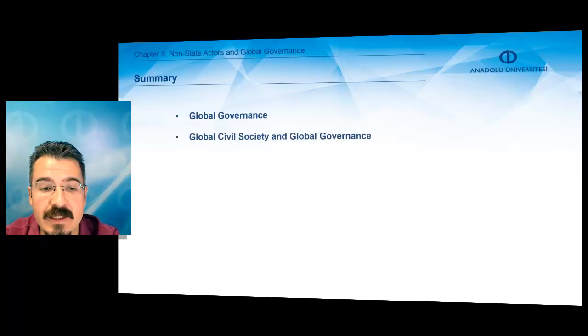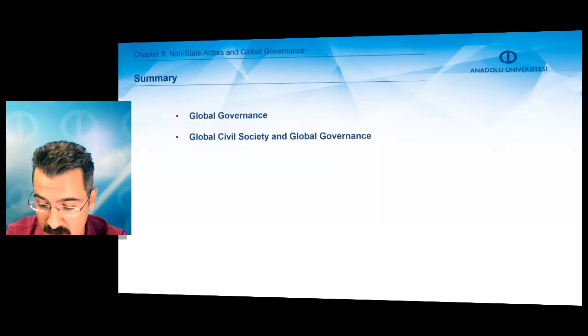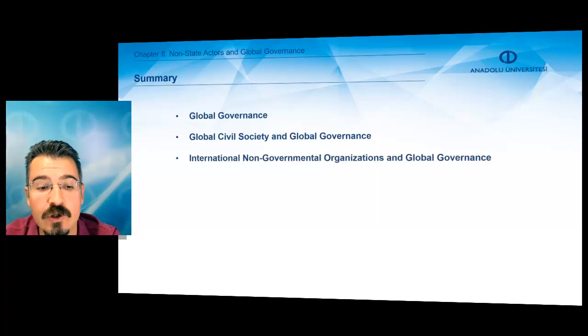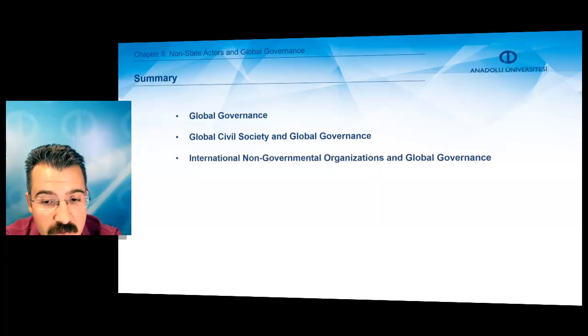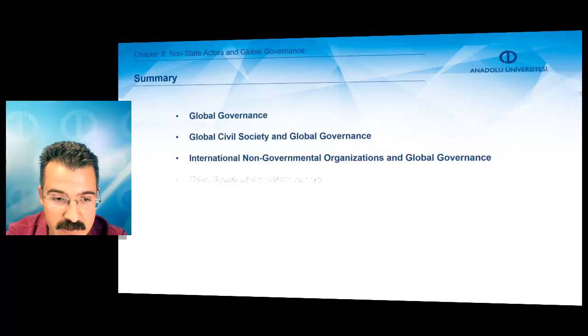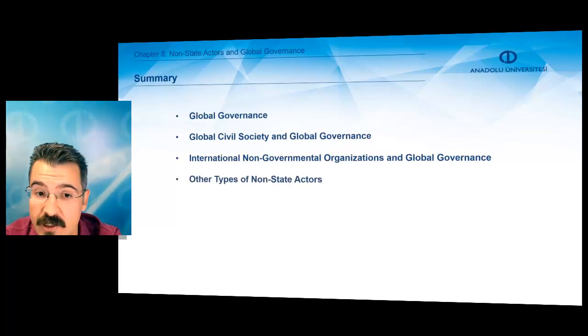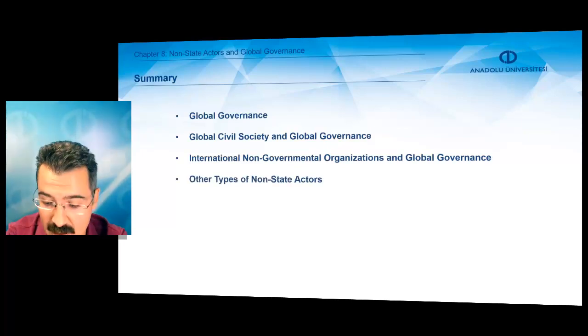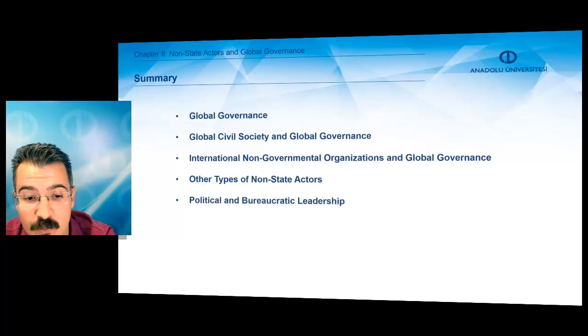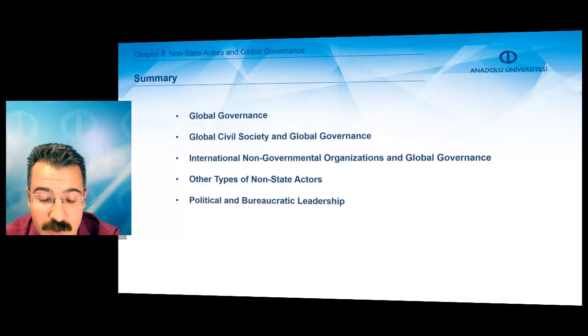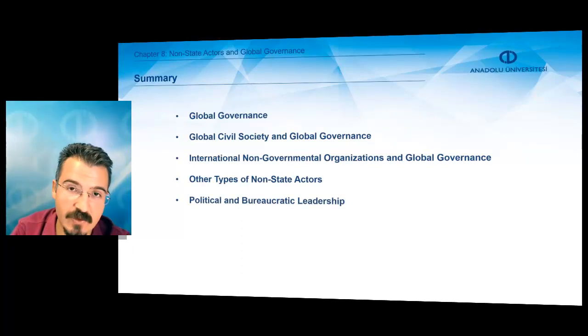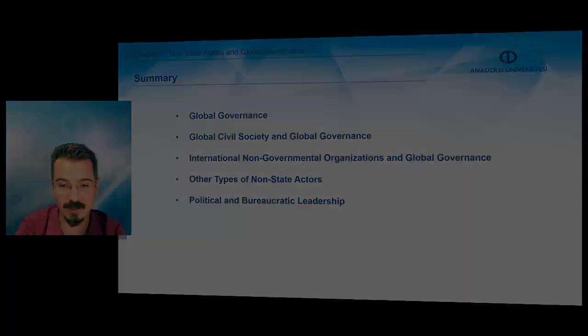In this chapter, we covered global governance, discussed the concept of global civil society and global governance, focused on international non-governmental organizations and global governance, considered other types of non-state actors, and discussed the role of political and bureaucratic leadership in global governance. Thank you very much for joining me.